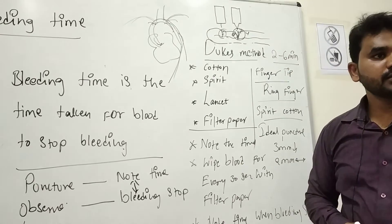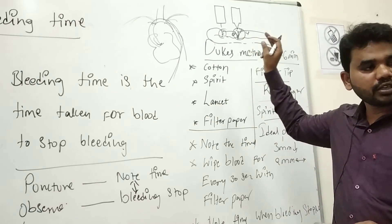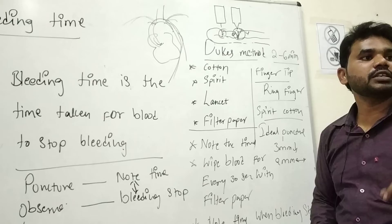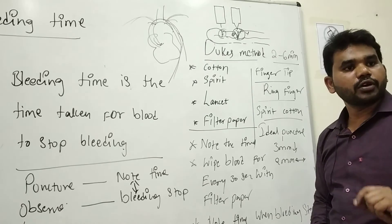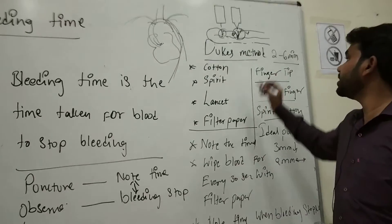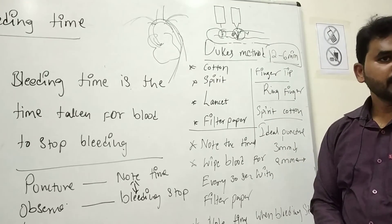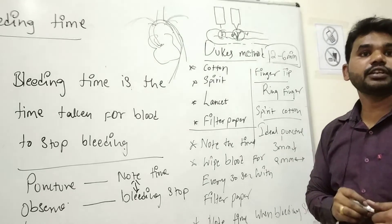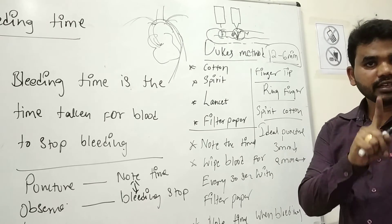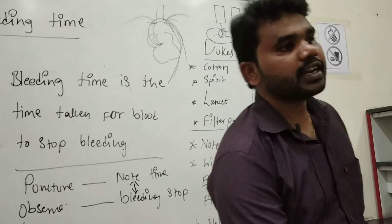Now you can perform this test. You can perform the bleeding test using the Dukes method on 1 or 2 people and check — if they are healthy the bleeding value will be between 2 to 6 minutes. If the value is increased, then definitely you should go to the doctor. Now we will go over the another method.